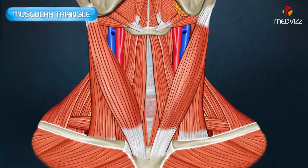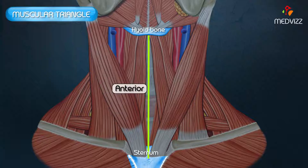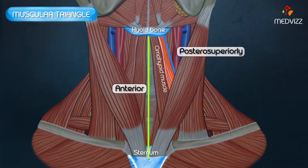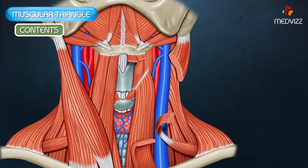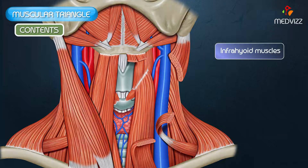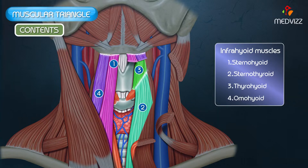Finally, the muscular triangle: its anterior boundary is formed by the anterior median line of the neck from the hyoid bone to the sternum, posteriorly by the superior belly of the omohyoid muscle, and the lower part of the anterior border of the sternocleidomastoid muscle. The chief contents of the muscular triangle are the infrahyoid muscles, which also form the floor. These muscles are the sternohyoid, sternothyroid, thyrohyoid, and omohyoid muscles. This completes the anterior triangle of the neck.